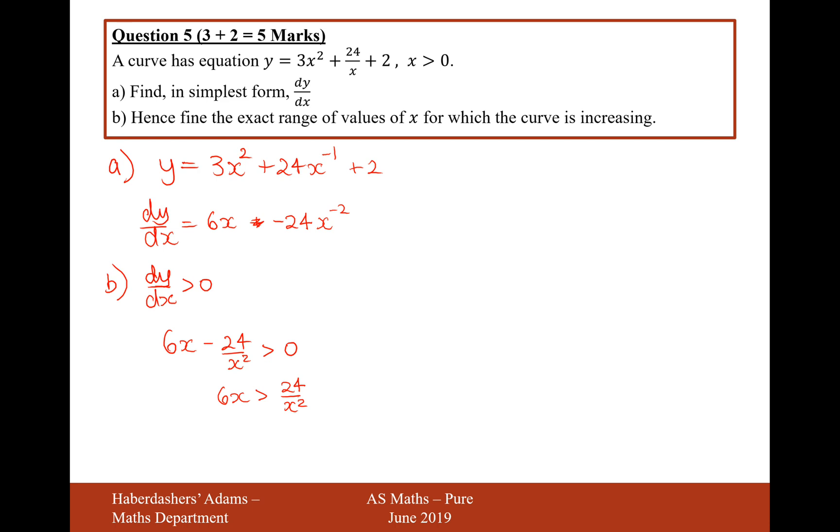Now you're allowed to times by x squared because x squared is always going to be positive. So 6x cubed is greater than 24. Let's divide by 6, so it would be x cubed is greater than 4, because 6 times 4 is 24. And then we cube root, so it's going to be x is greater than the cube root of 4.